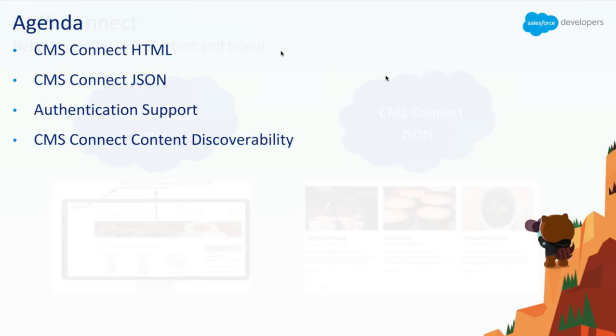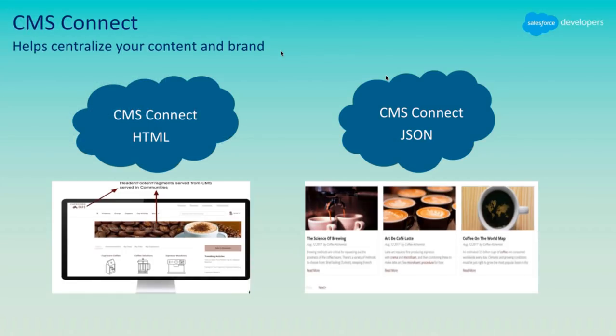This capability allows your CMS and communities to coexist without duplicating your content management processes, and have the same branding experience in communities without having to recreate the content. CMS Connect can pull content from pretty much any CMS provider, including Adobe Experience Manager, WordPress, Drupal, Sitecore, and SDL, as a few examples. We have built two types of connectors: HTML and JSON.